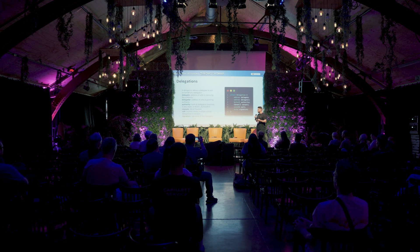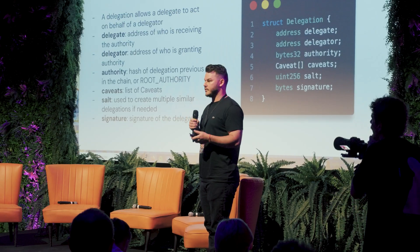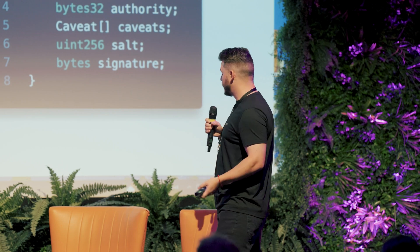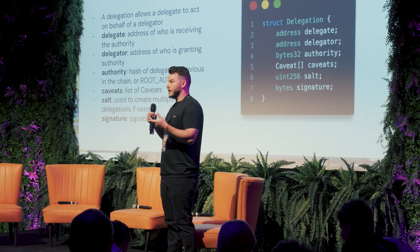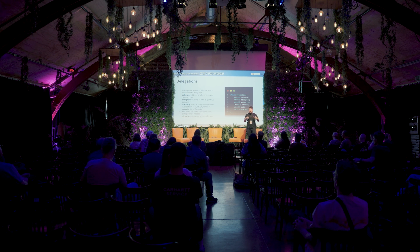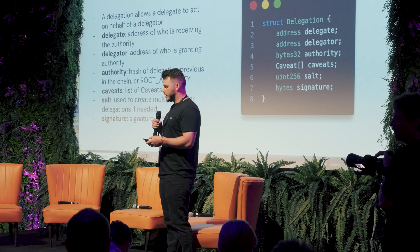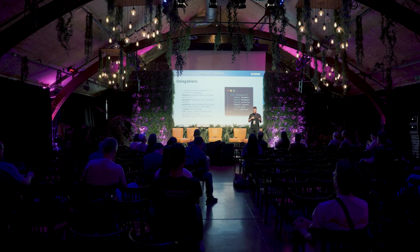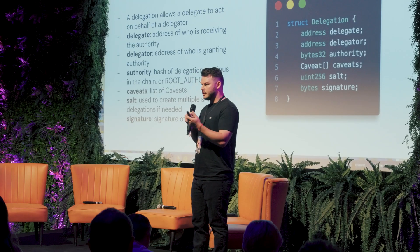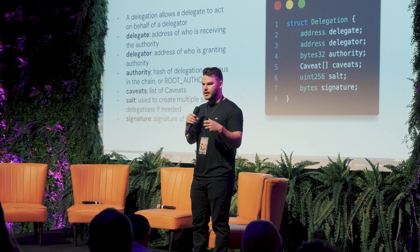A delegation is just a permission that allows a delegate to do something on behalf of the delegator. We have these different fields. The delegate is the address who can perform this action with that authority. The delegator is who's granting that permission. The authority is used in the chain — it's the delegation hash of the previous delegation in the chain. If you're the root delegator, then it's using the root authority. The list of caveats constrains conditions and rules on the delegation. Salt is used to change the delegation hash if needed, and signature is used for off-chain delegations.